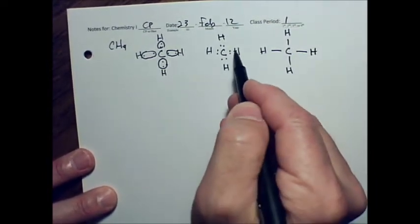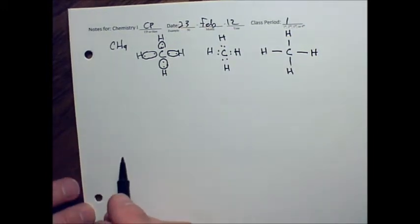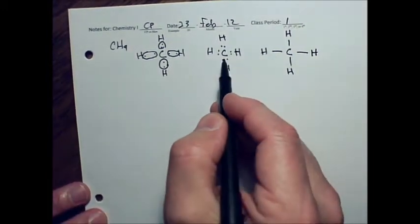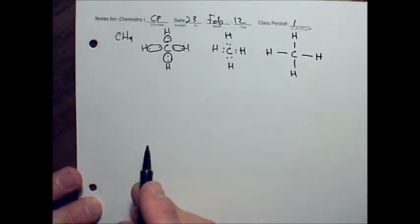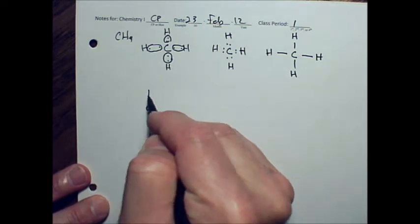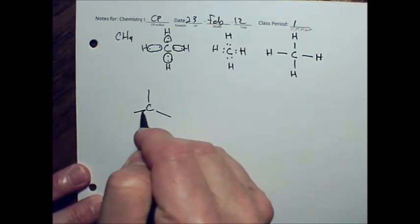So we go back to the Lewis dot formula to start looking at how to do a three-dimensional arrangement. We have one, two, three, four sets of electrons around a central atom. So we're going to have a tetrahedral electron pair shape.